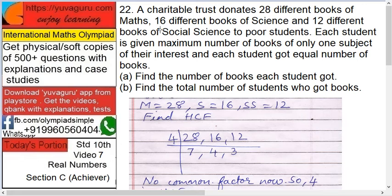It means that there are 28 books of maths, 16 of science, and 12 of social science. Each student got books of only one subject of his choice. For example, one student can get 3 books — maths 1, science 1, and social science 1. That is possible.